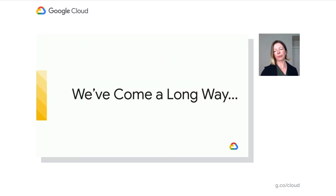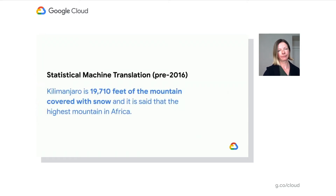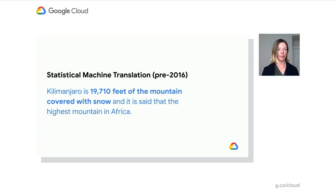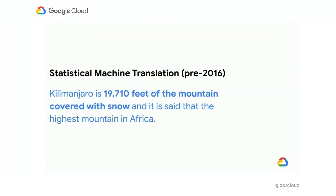Let's take a quick look at where we started. Pre-2016, the world was relying on statistical machine translation. As an example, we take a set paragraph from Japanese and translate it into English for readability. This translates as: "Kilimanjaro is 19,710 feet of the mountain covered with snow, and it is said to be the highest mountain in Africa." It's a little awkward in how it's written, and there are some words missing if you're a fluent reader.